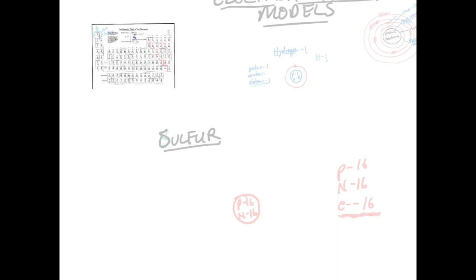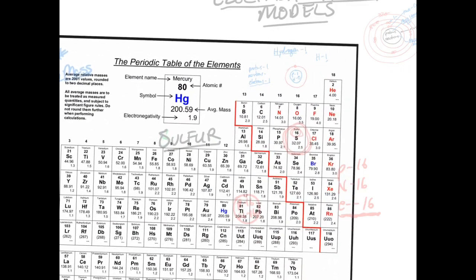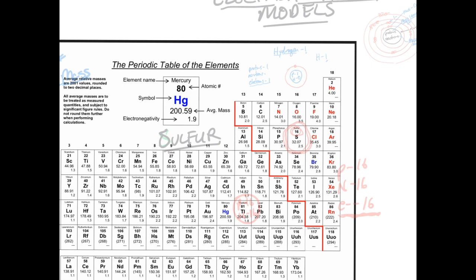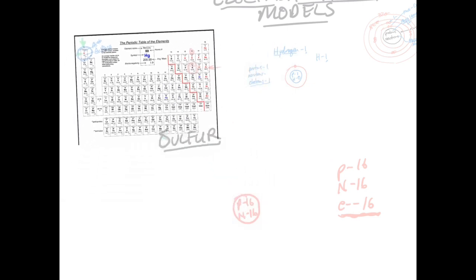Now we need to know where to place the 16 electrons — specifically, how many energy levels sulfur has. On the periodic table, sulfur is in period 3, so it has three energy levels. Sulfur is also in group 16. The ones digit of the group number tells you how many valence electrons the atom has, so group 16 gives us six valence electrons.